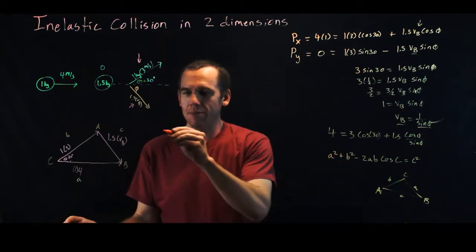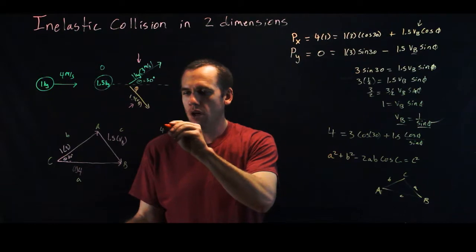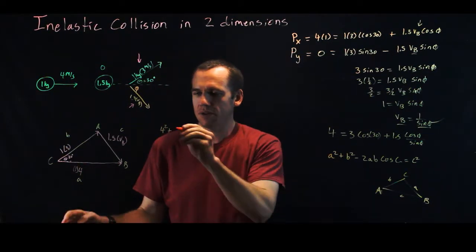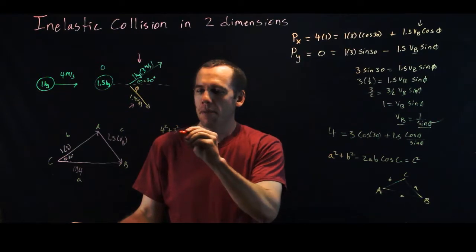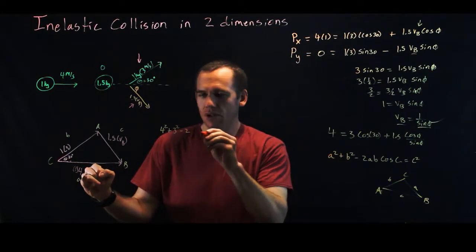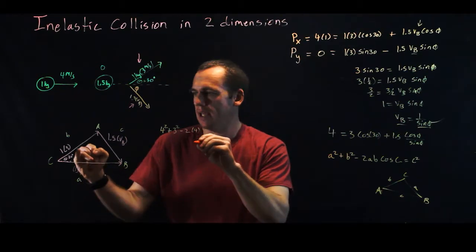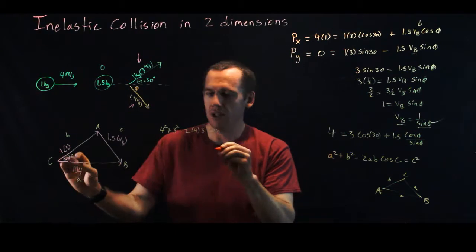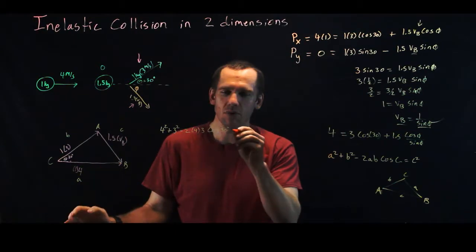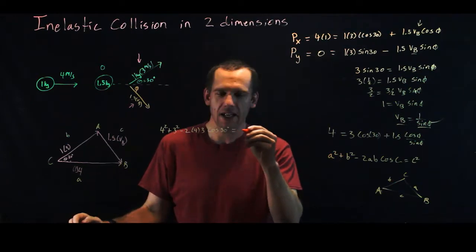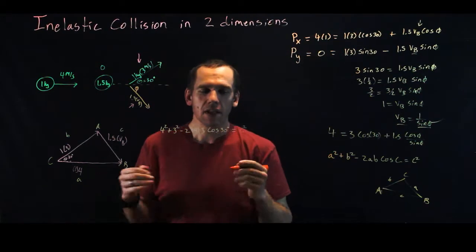So a squared is this side, that becomes 1 times 4 is 4, 4 squared, plus b squared, b is this side, well, 1 times 3 is 3, so 3 squared, minus 2ab, so that's 2 times a, which is 4, times b, which is 3, times the cosine of the angle between them, which is 30 degrees, is equal to this side over here, c squared, but that's c squared, okay?